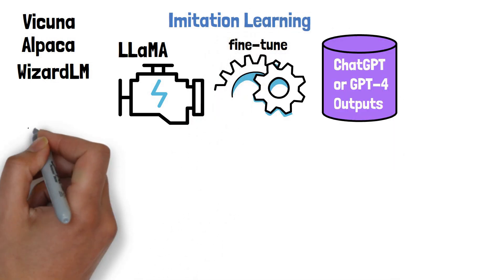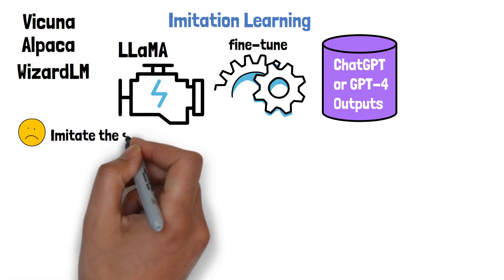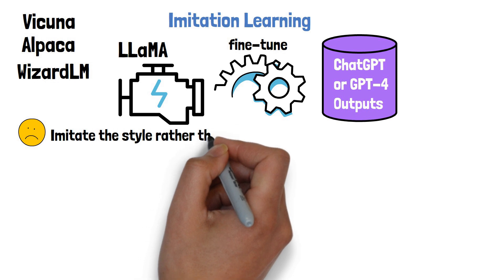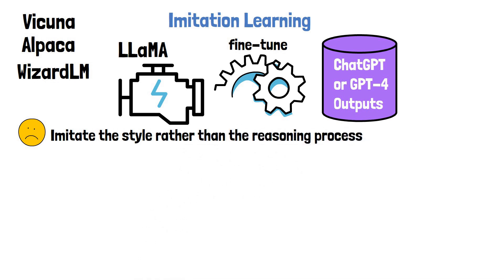According to ORCA paper, in this process as done so far the models learn to imitate the style rather than the reasoning process of the huge models. The researchers claim that common evaluation methods are causing to overestimate the smaller model capability.